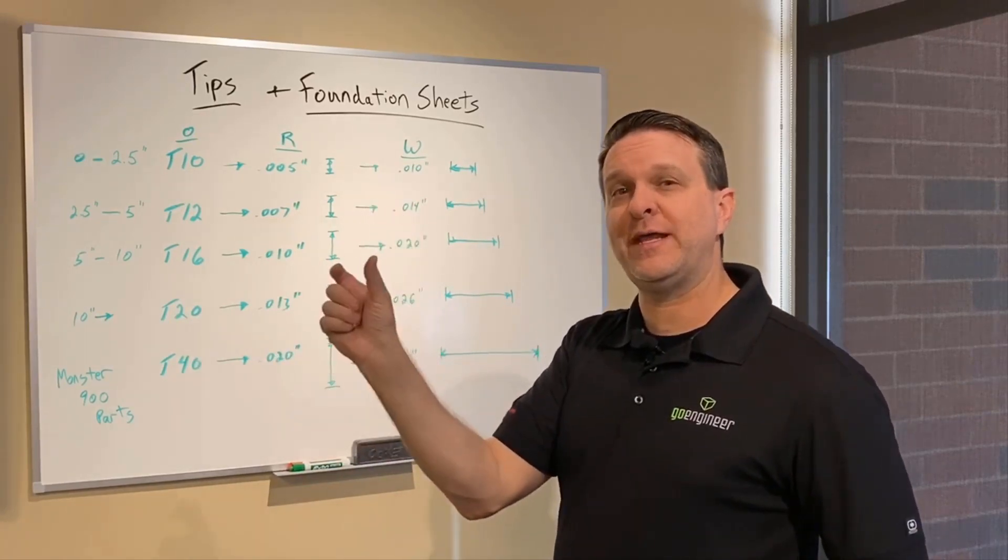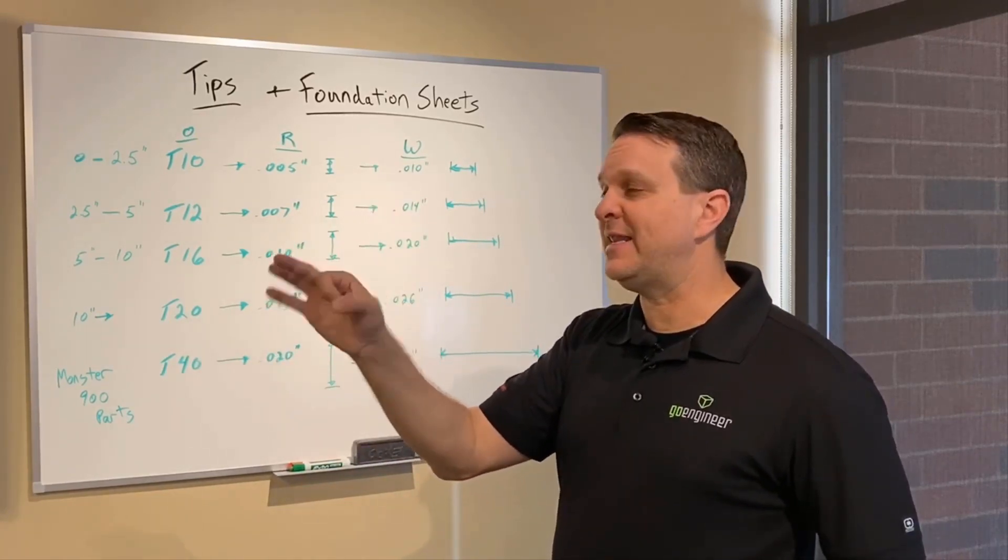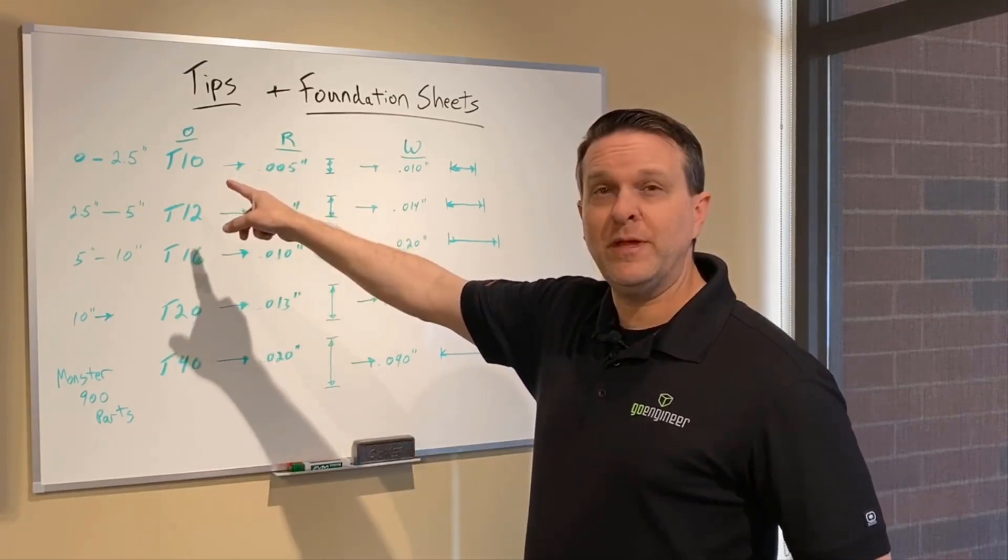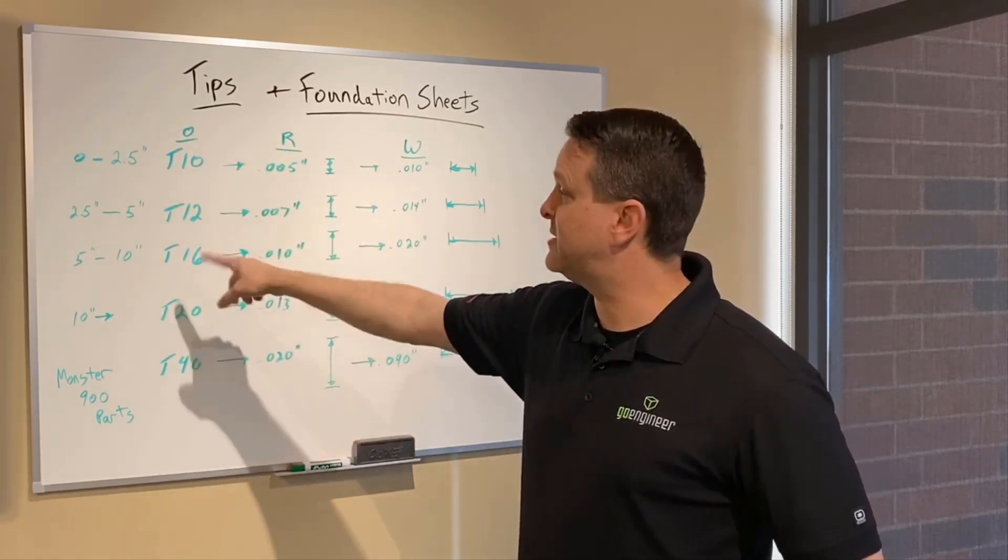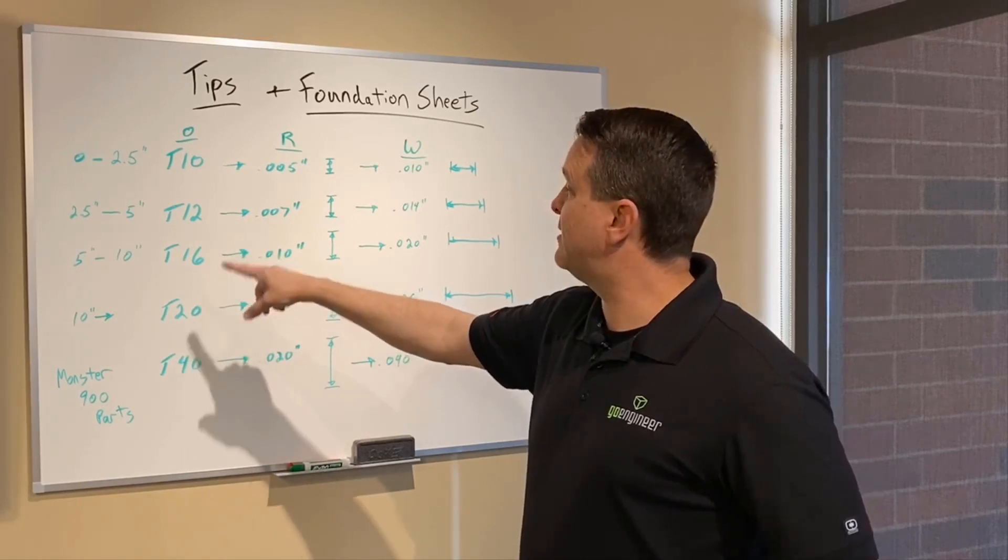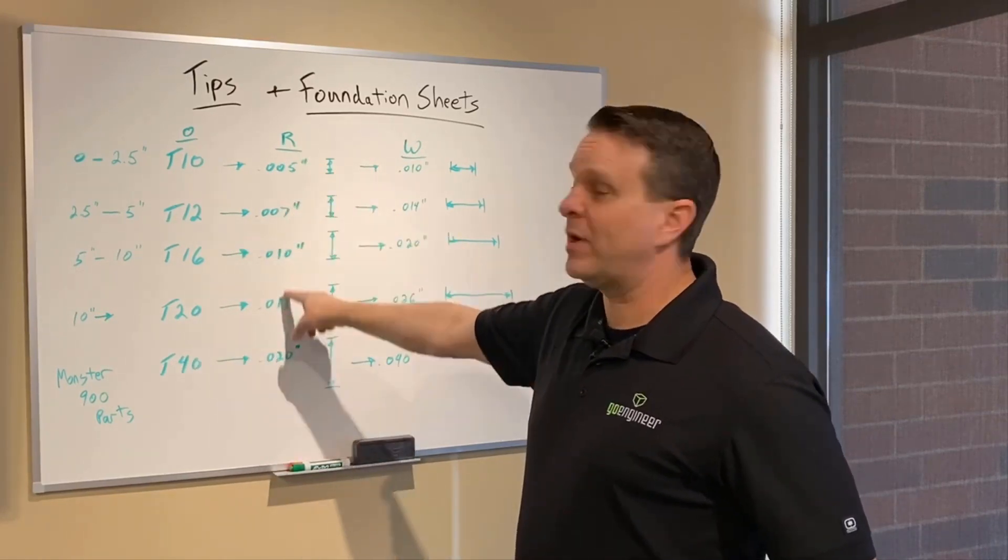So 5 thousandths tall, 10 thousandths wide, out of a 10 thousandths orifice hole. So when you see these numbers, that's what they mean. This is the size of the hole that then correlates to a resolution.